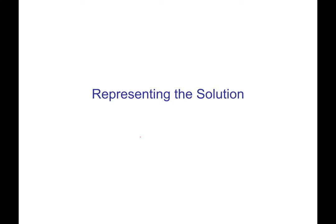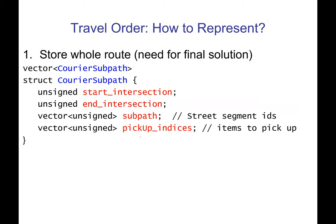The last thing I was going to talk about today is how to represent the solution. So far I've been drawing this on slides, which is not what you put into code. So how do we represent the solution so you can actually write code to change it, evaluate the quality or travel time, and so on? Let's first look at what you have to return. Your courier path function has to return a vector of what are called courier subpaths.